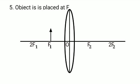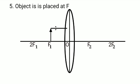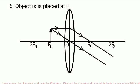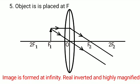When object is placed at F, after refraction the rays are passing parallel to each other. So we can say they will meet at infinity. The image is formed at infinity and it is real, inverted and highly enlarged.